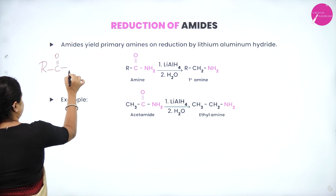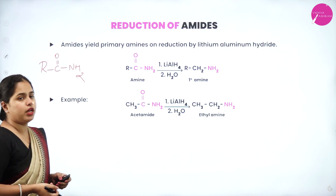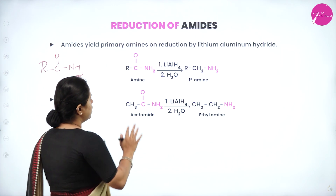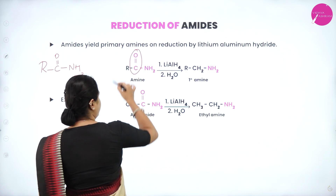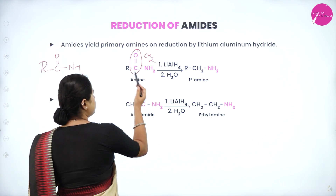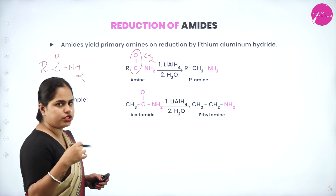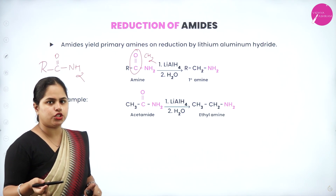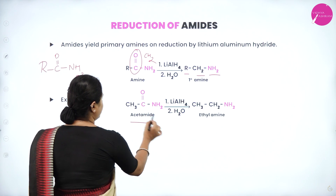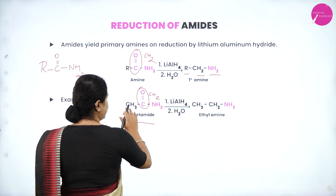Next is reduction of amides. Amides (R–CO–NH₂) yield primary amines on reduction by lithium aluminium hydride (LiAlH₄). In this reaction, the carbonyl group (C=O) is converted to a CH₂ group — oxygen is removed and hydrogen is added. So R–CO–NH₂ gives R–CH₂–NH₂. For example, acetamide (CH₃–CO–NH₂) is reduced by LiAlH₄: the CO is converted to CH₂, giving CH₃–CH₂–NH₂ (ethanamine).